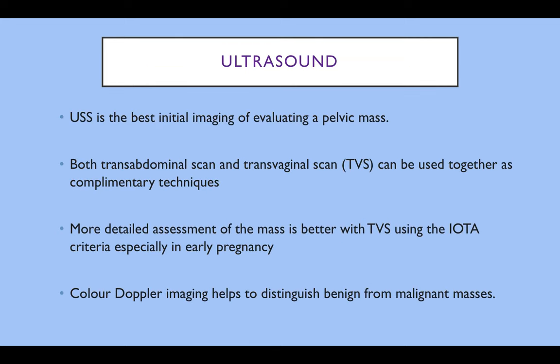Ultrasound is the best initial imaging tool for evaluating a pelvic mass. Both transabdominal and transvaginal scan can be used together as complementary techniques. More detailed assessment is much better using a transvaginal scan with the IOTA criteria, especially in early pregnancy, and colour Doppler also helps us to distinguish benign from malignant masses.